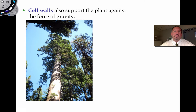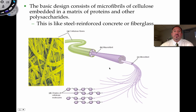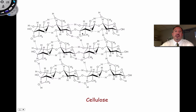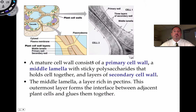The cell wall maintains the shape of the cell and provides protection. It also supports the plant against the forces of gravity — the rigidity of a tree trunk rising hundreds of feet into the air is all tribute to the cell wall. The basic design of the cell wall is made up of microfibrils, like steel-reinforced concrete, with cables of sugars connected together. What makes cellulose really strong is that it's held together by beta-glycosidic linkages, which are very difficult to hydrolyze. Cellulose, sometimes known as fiber, is very strong and can't be broken down easily.